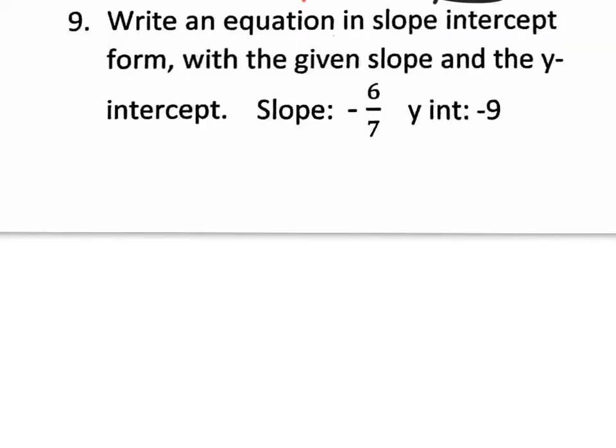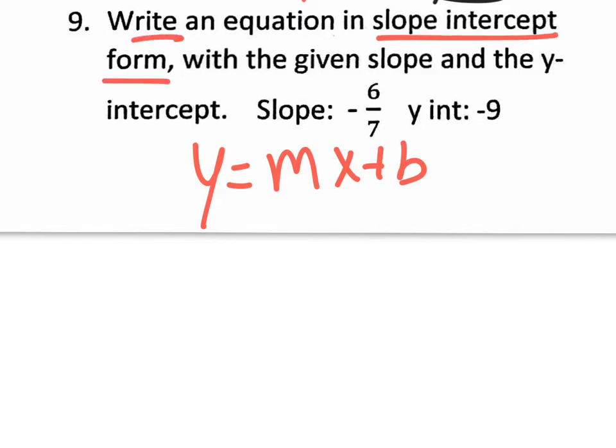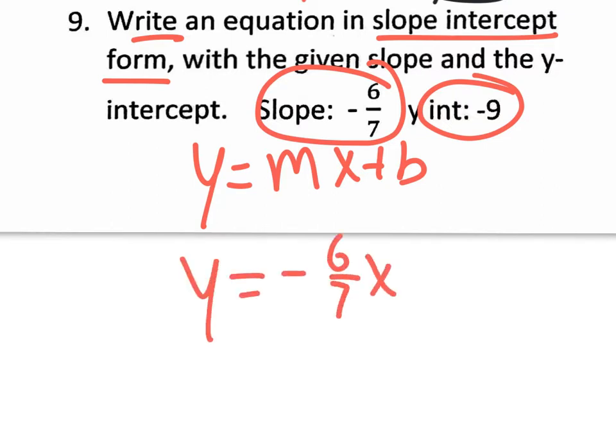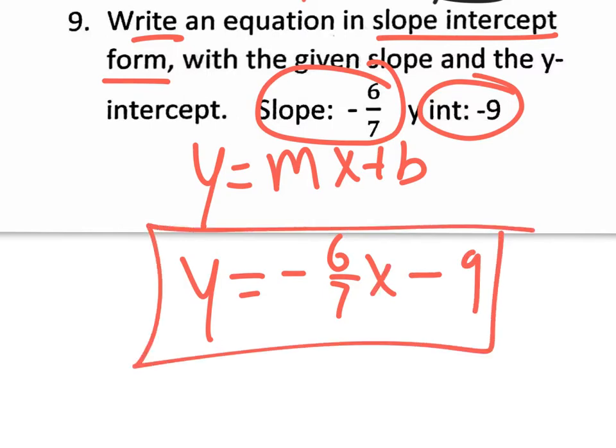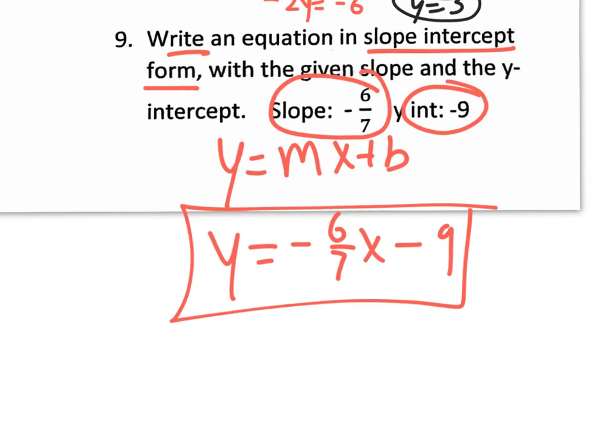Number nine, write an equation in slope intercept form with the given slope and the Y intercept. Ladies and gentlemen, if you miss this on the midterm, I want to slap you. I'm joking. Y equals MX plus B. That's slope intercept form. They want you to write it in slope intercept form. And guess what? They give you the slope and they give you the intercept. So what's the equation? There you go. Too easy. I'm just kidding. I'm not going to slap you, but like, seriously, that's ridiculously easy.